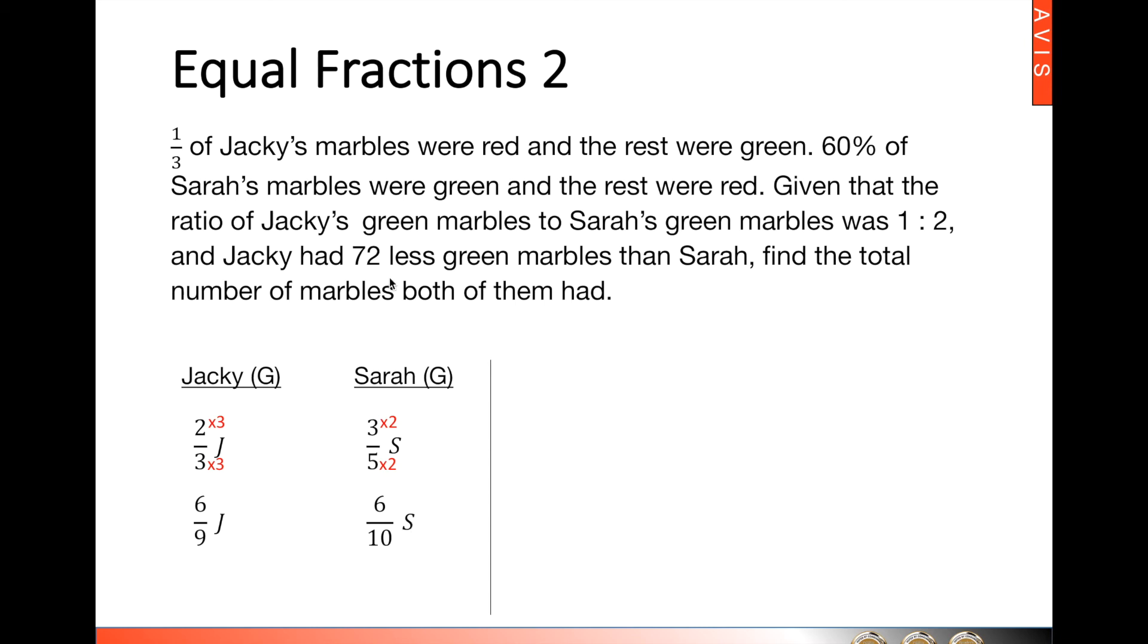Unfortunately, if you take a look at this statement, Jackie's green marbles to Sarah's green marbles was in the ratio of one is to two. In other words, the numerator for Jackie must be in one part, while Sarah's must be twice of that. So what we do next is we just multiply Sarah's numerator by two, as well as the denominator. So here we will get twelve over twenty of Sarah.